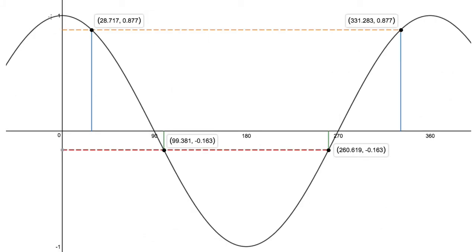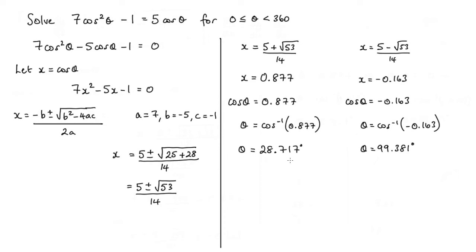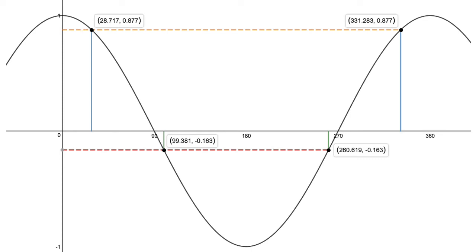So here we have the cosine graph here. We had the first value we're looking at, 0.877, and when we draw a line horizontally across, we pick up the first solution of 28.717, and that is the solution that we actually calculated. But we notice there is a second solution over here, which is 360 minus 28.717, or 331.283.